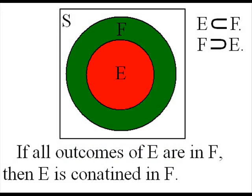If all outcomes of E are in F, then we say that E is contained in F. And we use the symbols in the top right, and you can use them in any order. So E is contained in F is really what it says in both, and you can really see that in the Venn diagram.